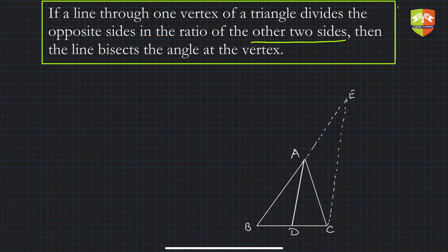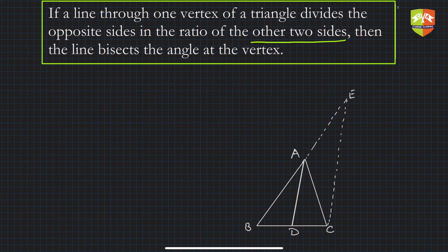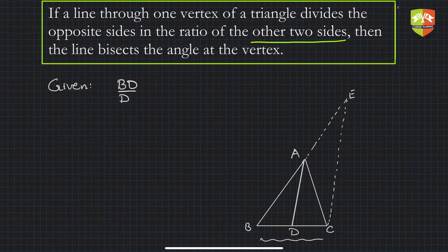ABC is a triangle. Let that vertex be A and let that line be AD. AD divides the opposite side BC. So if AD divides BC in the ratio of the other two sides — that is AB to AC — then what is given is that BD upon DC is equal to AB upon AC.